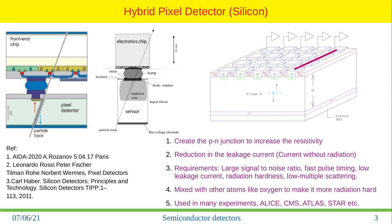The hybrid pixel detector has a p-n junction. There is a bulk with doping on the top and doping on the bottom. When a charged particle passes through, a depletion region is created. The electric field causes electron-hole pairs to drift towards the electrode, creating an induced current. This current is amplified by the amplifier and sent for preprocessing into the front-end chip.